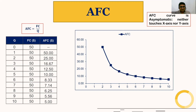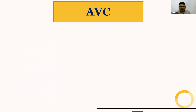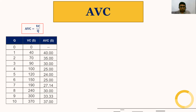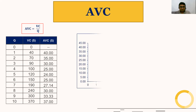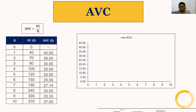Then we have average variable cost. Average variable cost is equal to variable cost divided by quantity. If you divide variable cost by quantity you will get the average variable cost column. The average variable cost curve is U-shaped — in the beginning it declines, then it reaches the minimum point, and then it starts increasing.